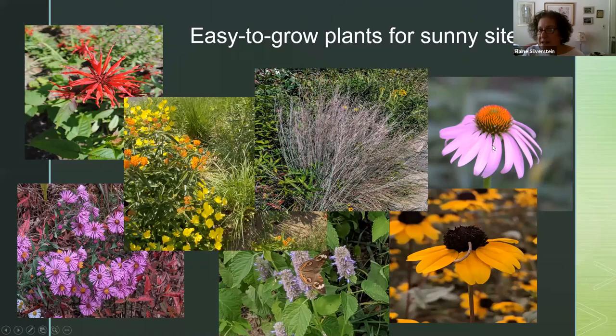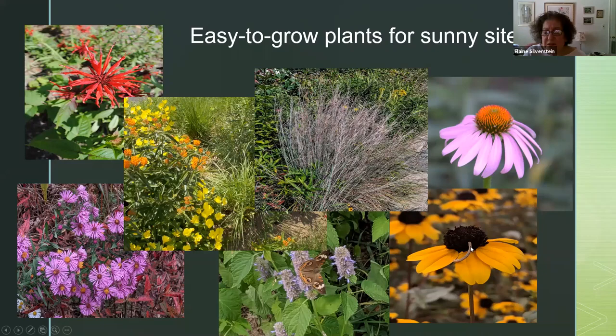Coneflower — echinacea — is technically not native to this area, but we grow it anyway; it's native a little further west. It doesn't do well for me — you need a wetter site and the critters love it. Rudbeckias: there are taller and shorter ones. My particular favorite is Rudbeckia triloba — and if you look carefully, you can see there's a little caterpillar on it, probably eating the seeds or flower parts. These are all quite easy to grow.